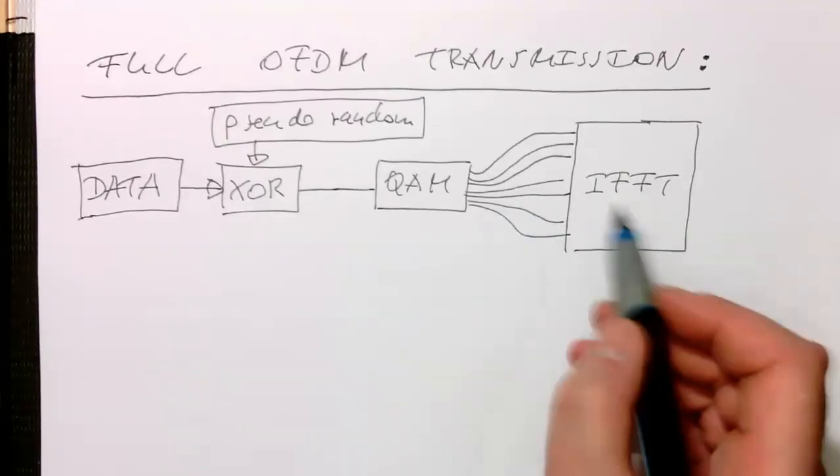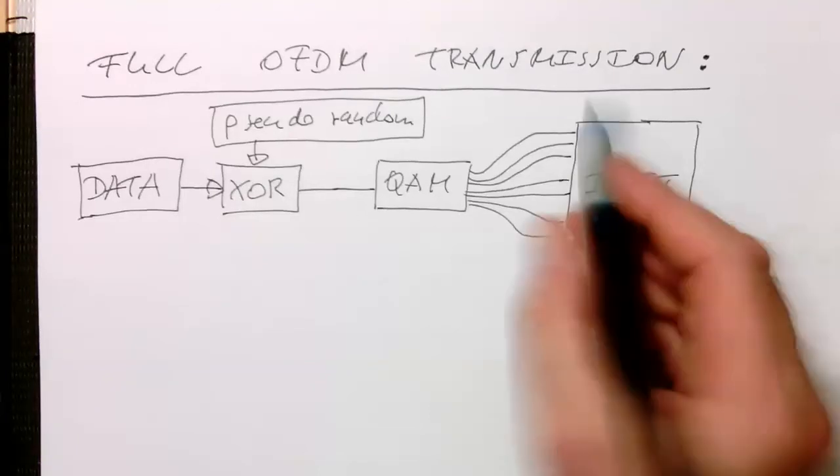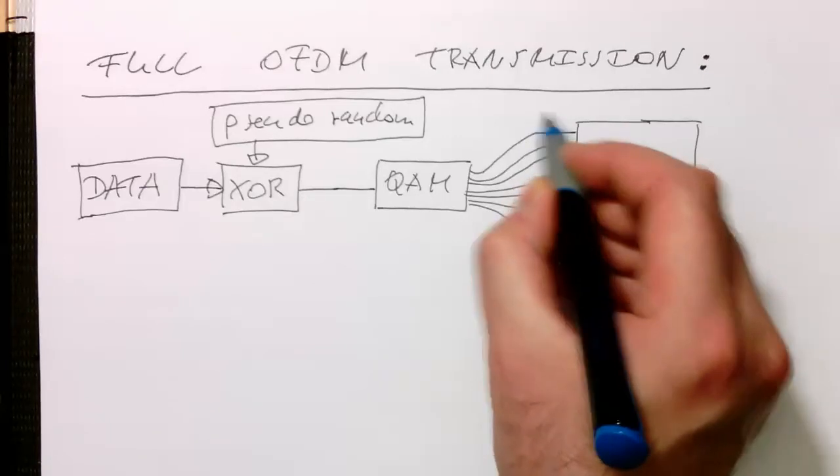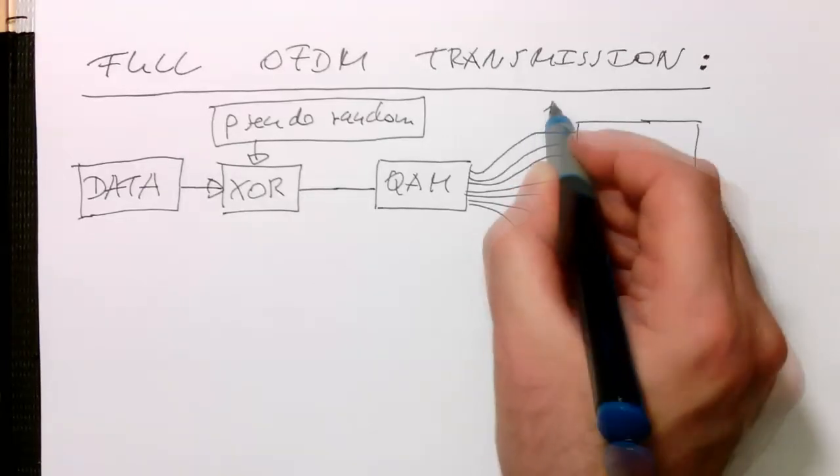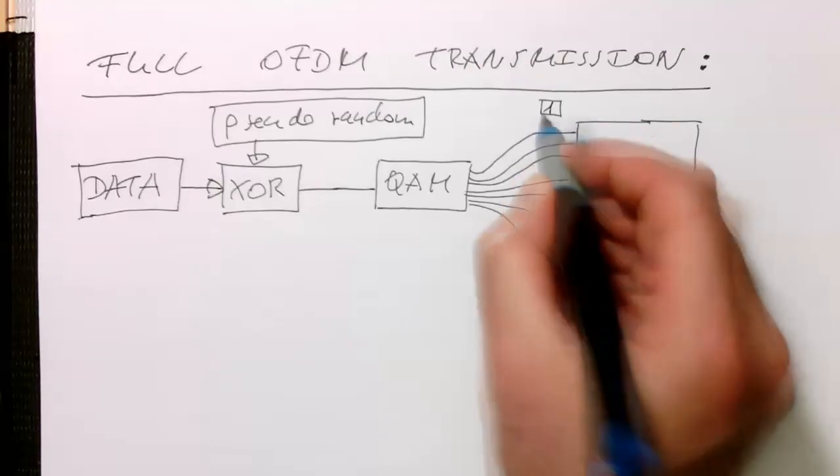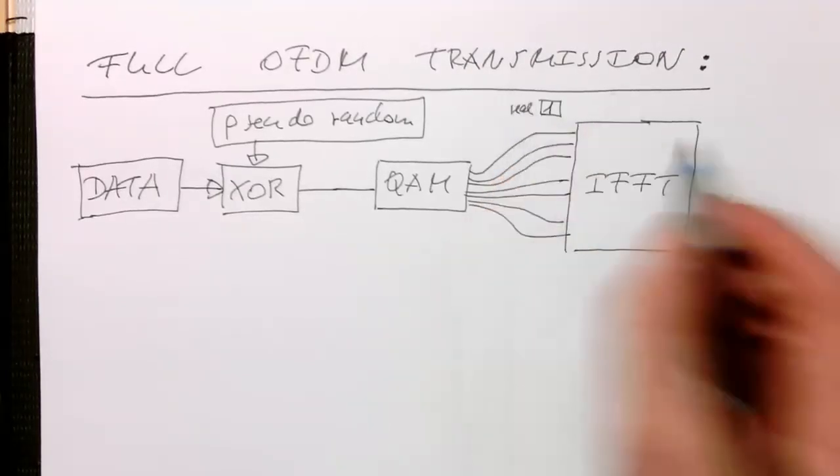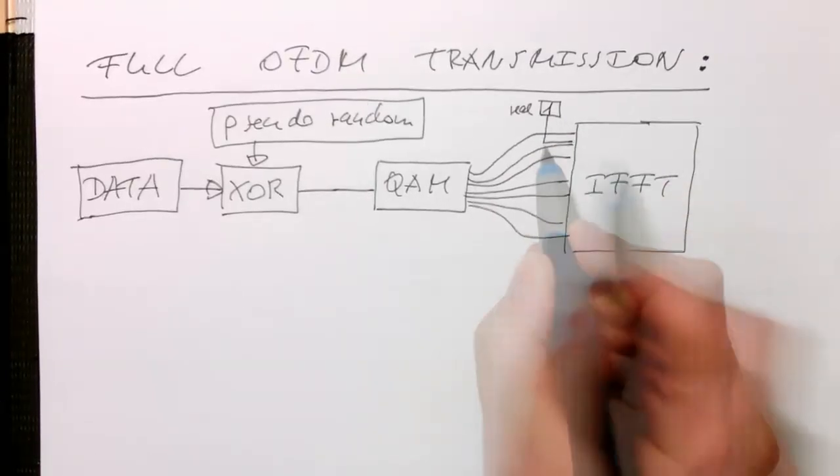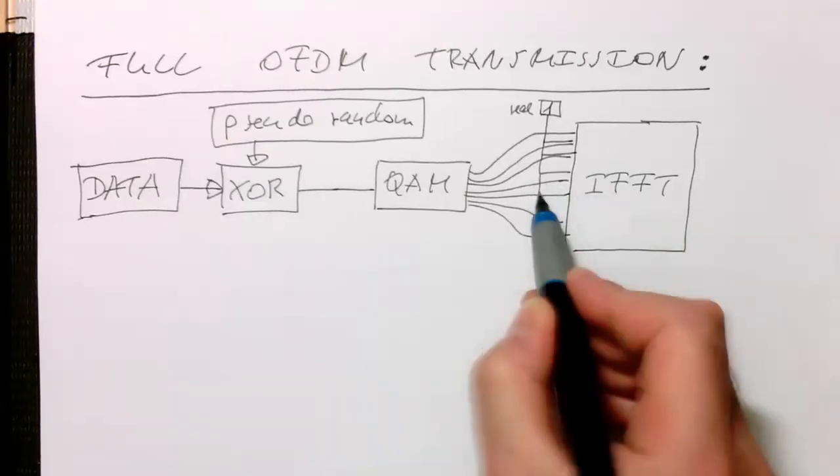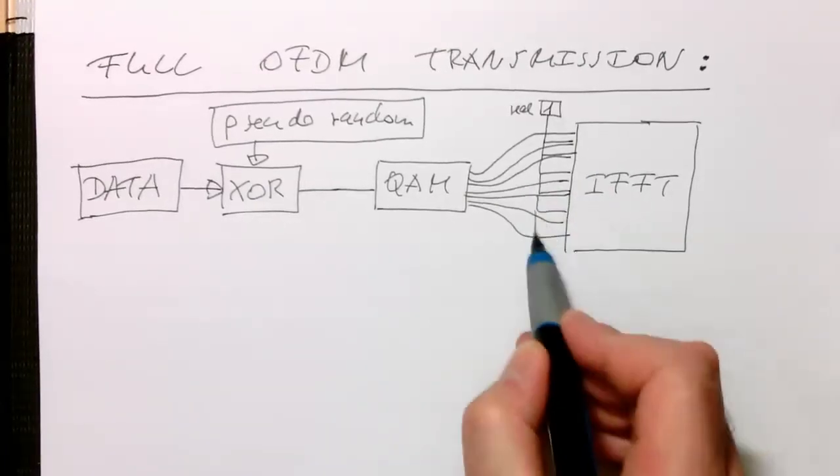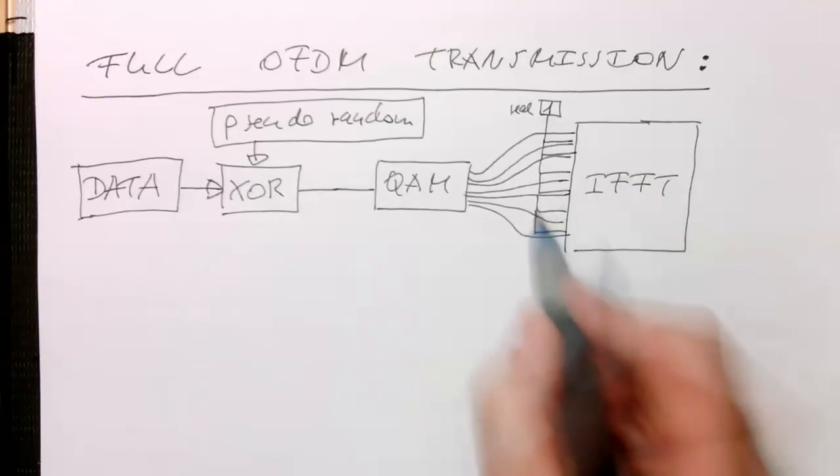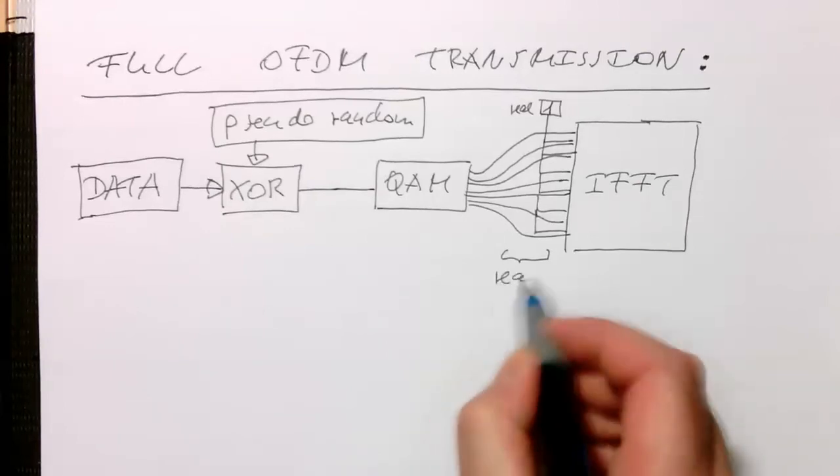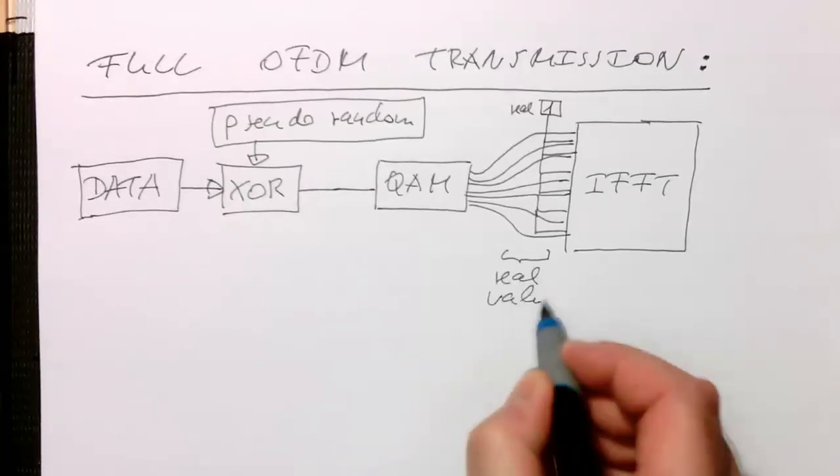But we also have our pilot tones. The pilot tones are, for example, the value 1, just a real valued 1. They are put here in between the data. The more the merrier, but obviously the more pilots, the less data can be transmitted. These are real valued pilots.